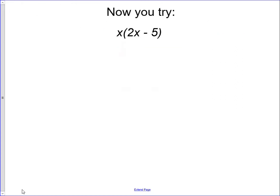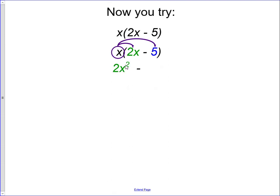Let's look at one more example — a little simpler but works the same way. The monomial x times the polynomial 2x minus 5. Using the distributive property, we distribute x across the difference inside the parentheses: x times 2x gives 2x squared, and x times 5 gives 5x. So the result is 2x squared minus 5x. This is the process for multiplying a monomial times a polynomial.